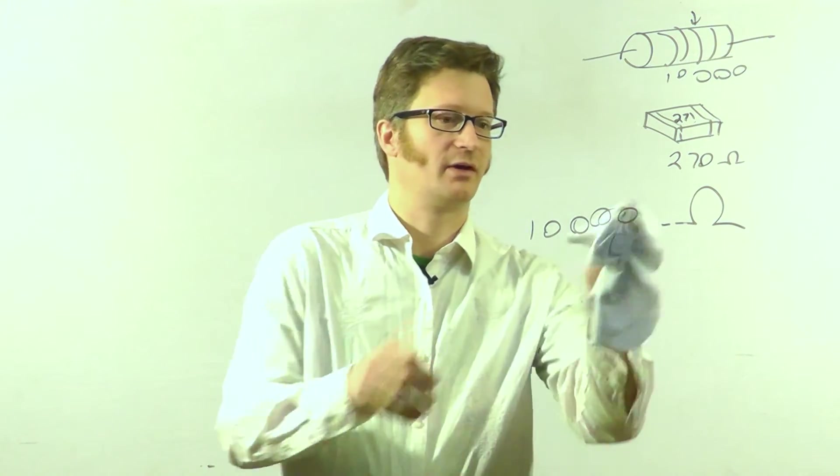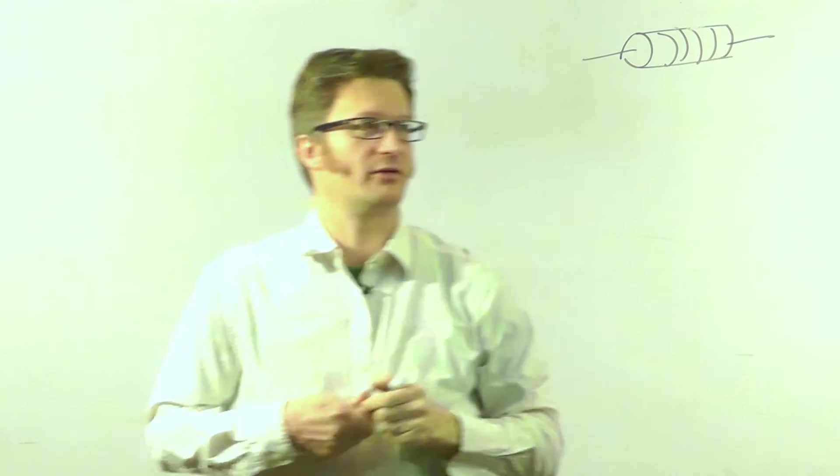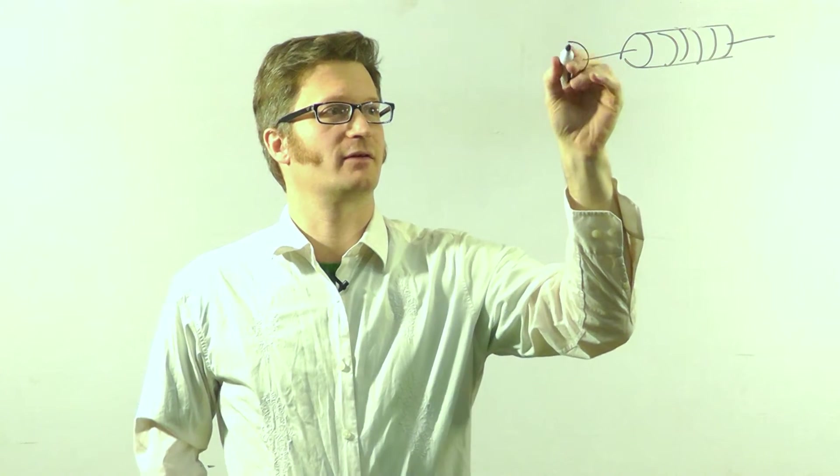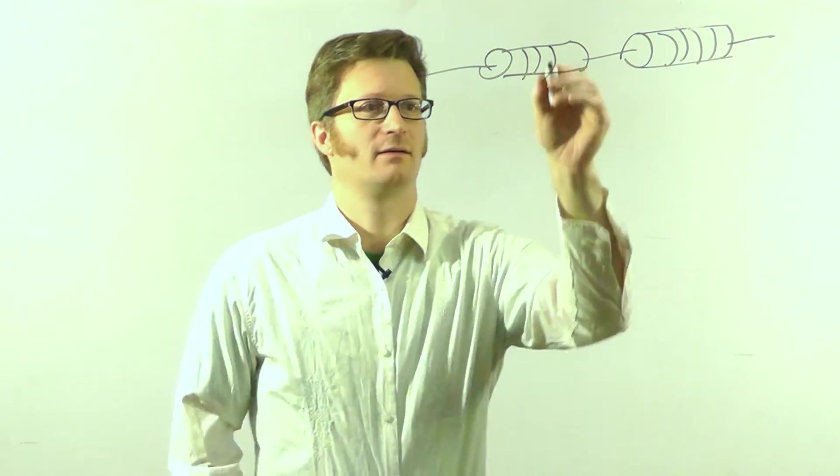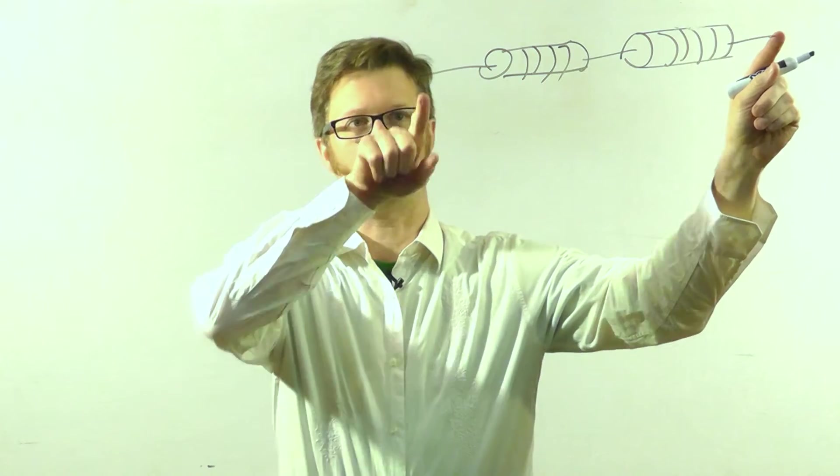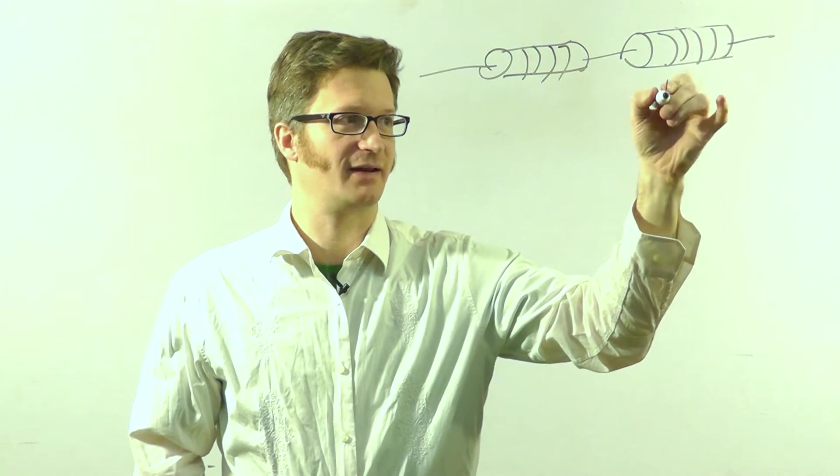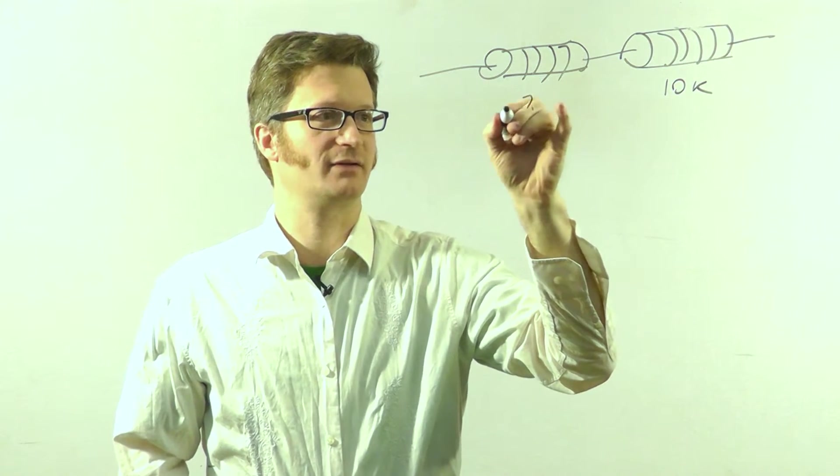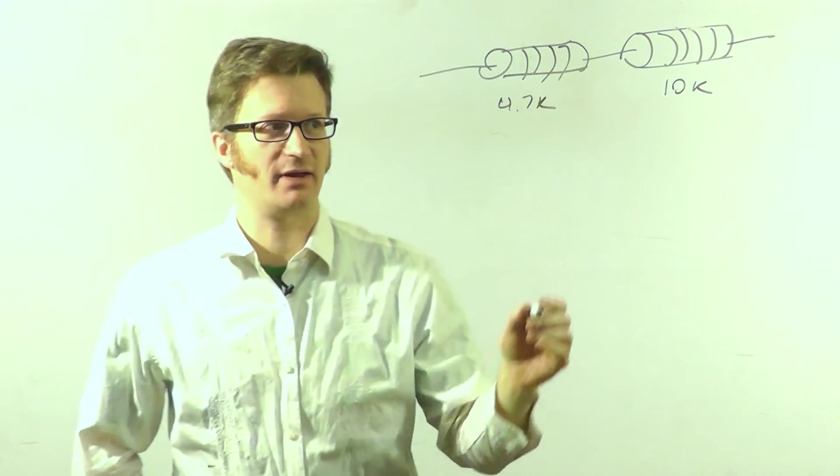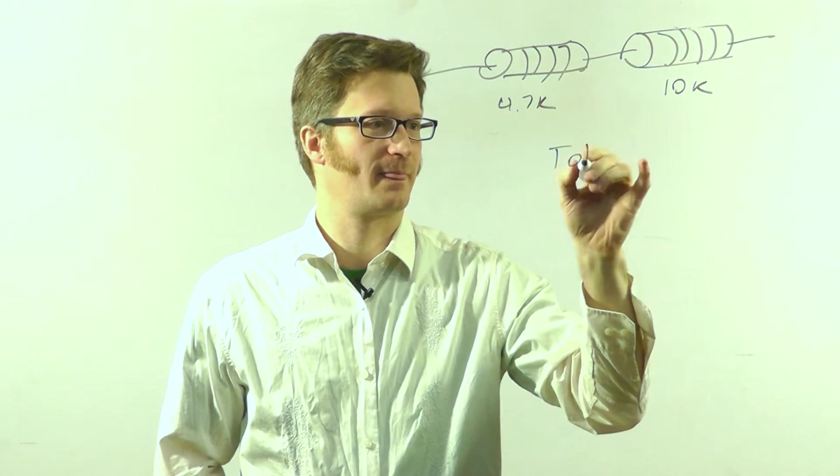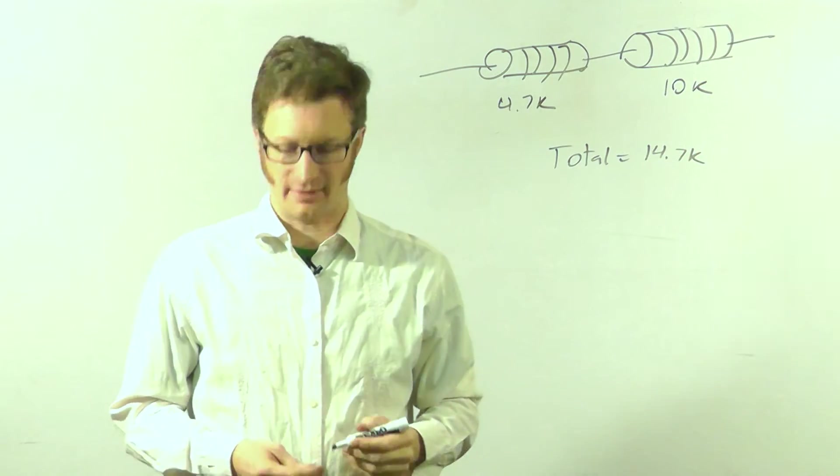Now let's talk about resistors in series and parallel. So if I have another resistor over here, like that, the way to determine the total resistance from this point to this point is to simply add up their values. So if this is a 10k and this is a 4.7k, then I just add them together to get total 14.7k.